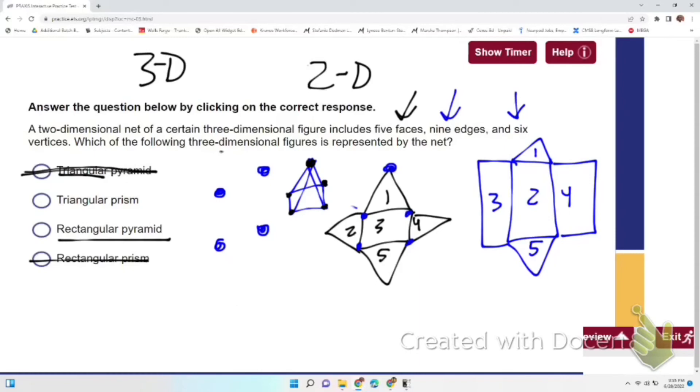It says six right there, so we need six, so that automatically weeds out the rectangular pyramid.